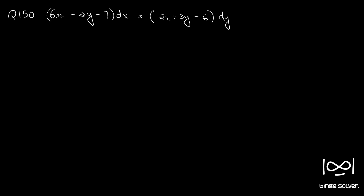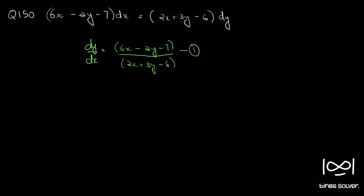Question number 150. We have 6x minus 2y minus 7 dx equal to 2x plus 3y minus 6 dy. Rearranging, we have dy by dx equal to 6x minus 2y minus 7 over 2x plus 3y minus 6. Call this equation 1.